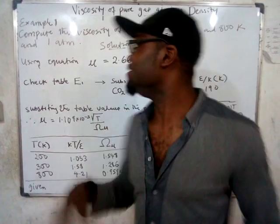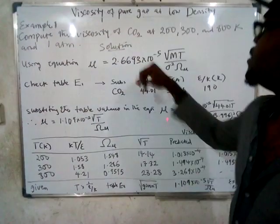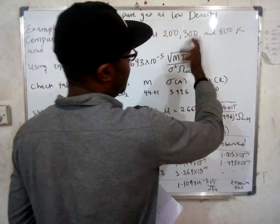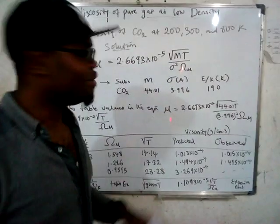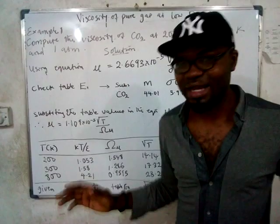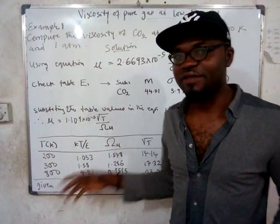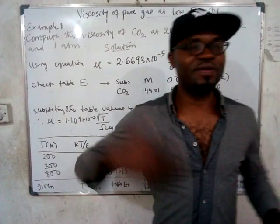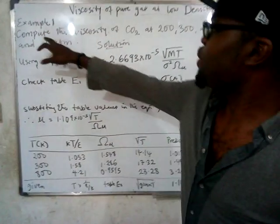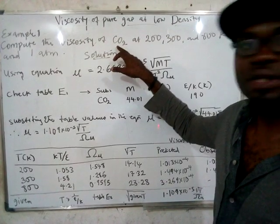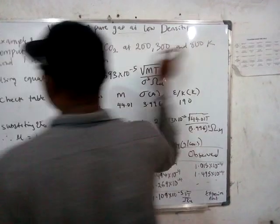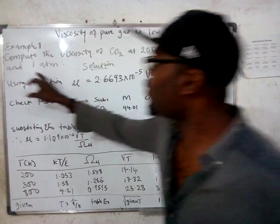In the subsequent class I'm going to give exactly the same question but at 400 and 500 K, but you need to understand this one to understand that one — this one is very explicit. Now the question says: compute the viscosity of CO2 (carbon dioxide) at 200, 300, and 800 K at one atmosphere.